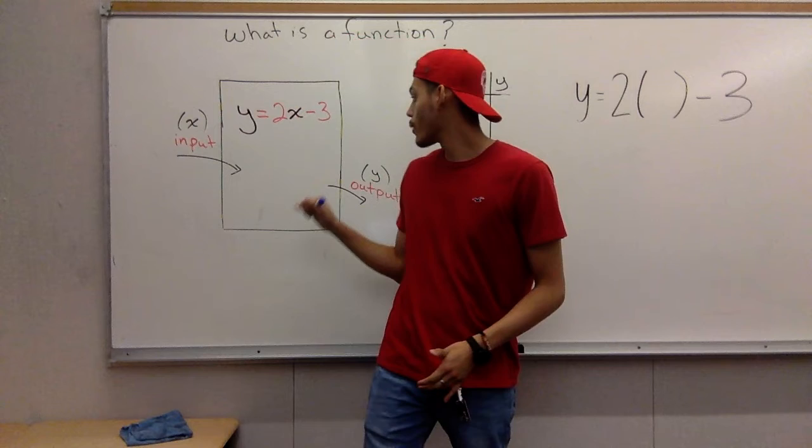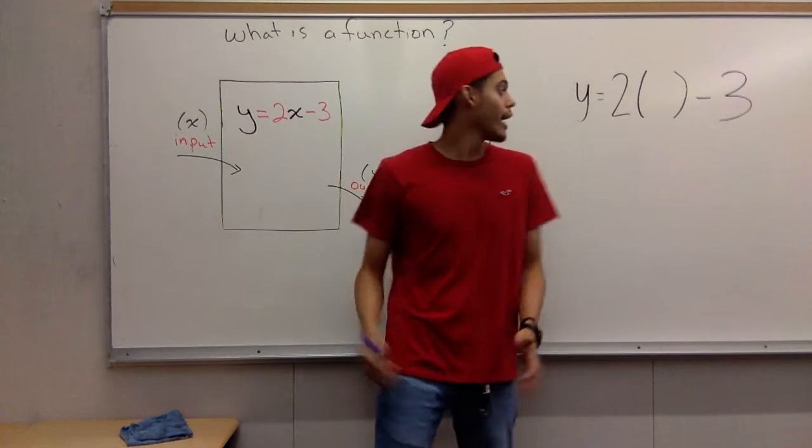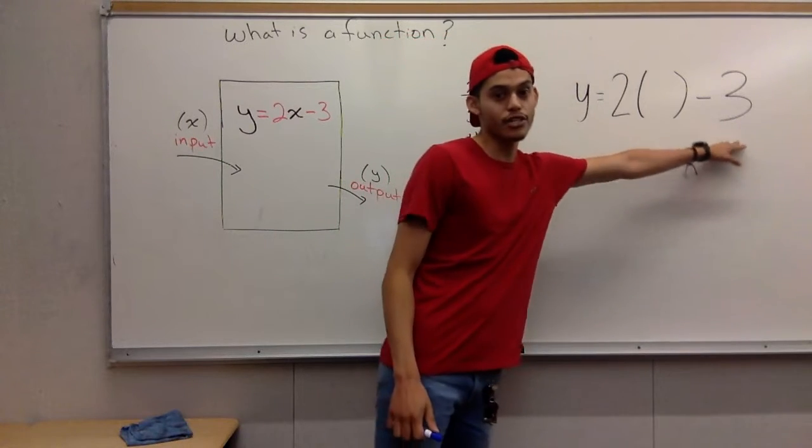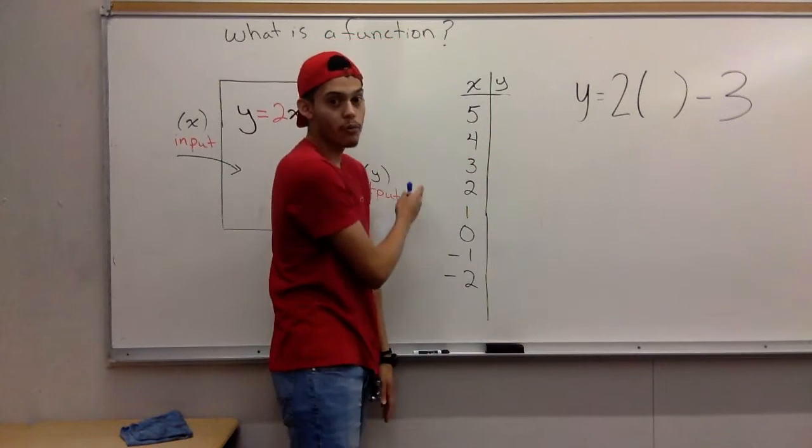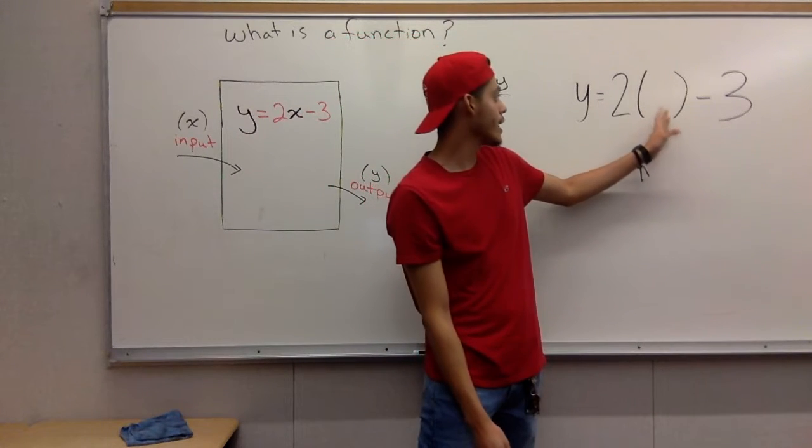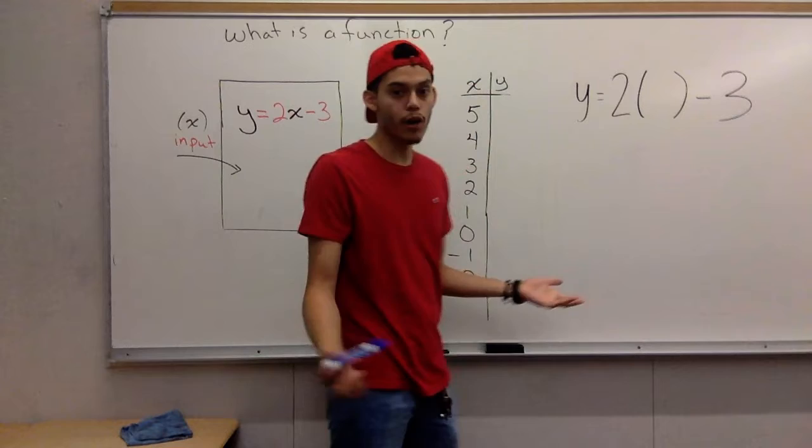So we have this equation, Y equals 2X minus 3. I wrote it over here, Y equals 2 and then this empty space minus 3. So this T chart, we're basically going to be using these X values and basically putting them in this empty spot and then just solving the problem.